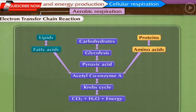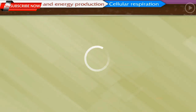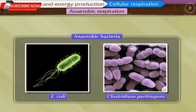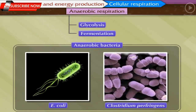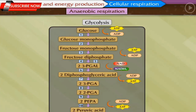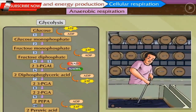After learning about aerobic respiration, let us now learn about anaerobic respiration, in which oxygen is not used. Some living organisms can survive without oxygen — for example, anaerobic bacteria — and follow anaerobic respiration for energy production. Glycolysis and fermentation are the two steps of anaerobic respiration. During glycolysis, glucose is incompletely oxidized and pyruvic acid is produced with less energy. Pyruvic acid is then converted into other products with the help of enzymes — this process is called fermentation.